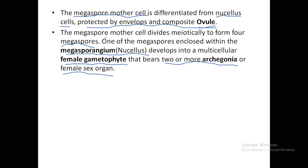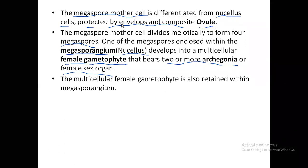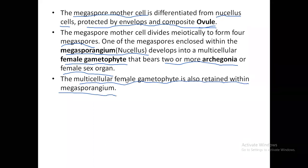To repeat: the megaspore mother cell divides meiotically to form four megaspores. Three megaspores will degenerate. One megaspore will be enclosed within the megasporangium, which has nucellus tissue, and will develop into a multicellular female gametophyte that bears two or more archegonia — the female sex organs. This multicellular female gametophyte is also retained within the megasporangium; it does not come out. That flower-like structure remains within the megasporangium.